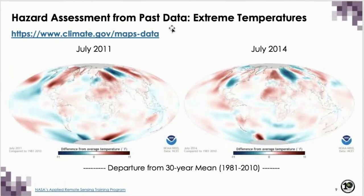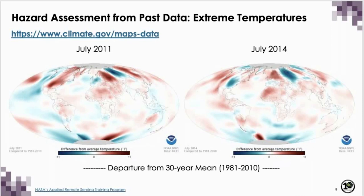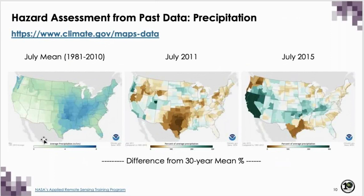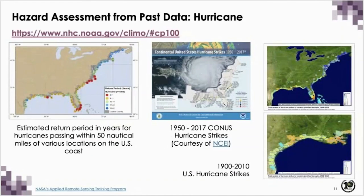The same site provides assessment for extreme temperatures globally. The departure from the 30-year mean shows much warmer areas across the globe for July 2011 and 2014. You can browse back and forth to see how extreme temperatures are changing from year to year, giving information about where there is large variability versus truly extreme temperatures. You can then design your risk assessment and risk management based on some of these data.